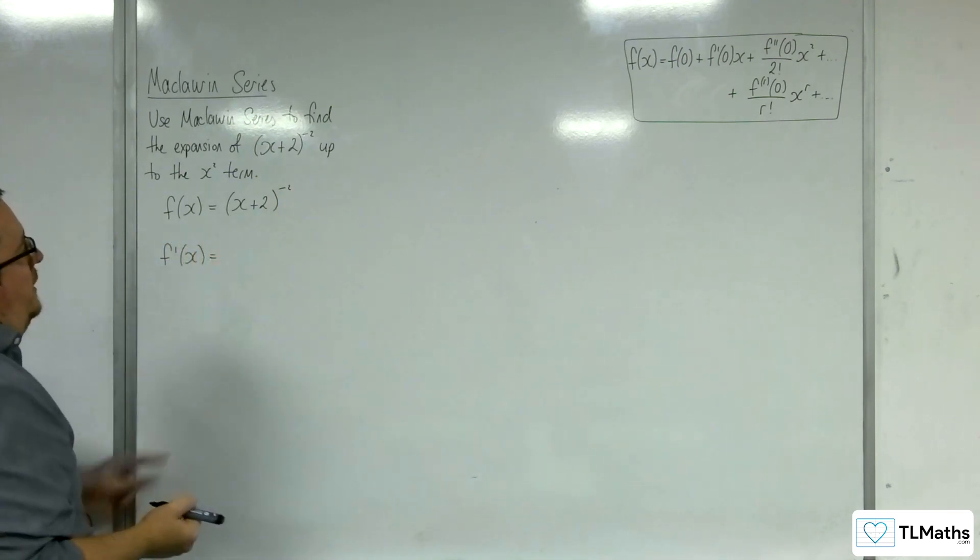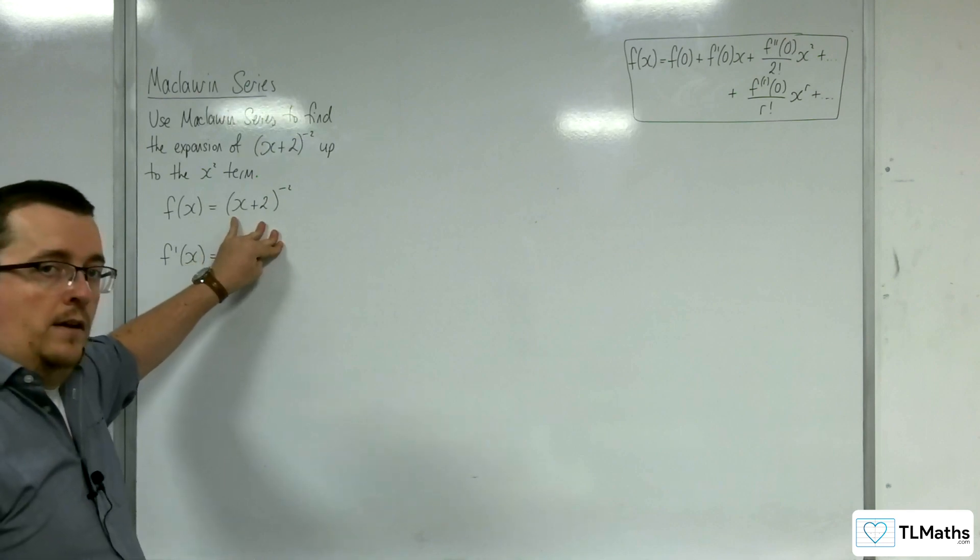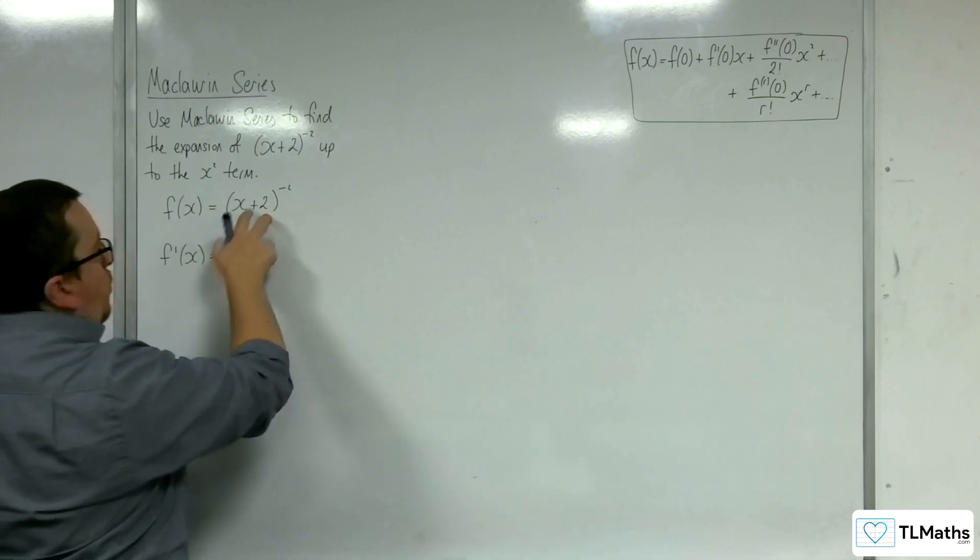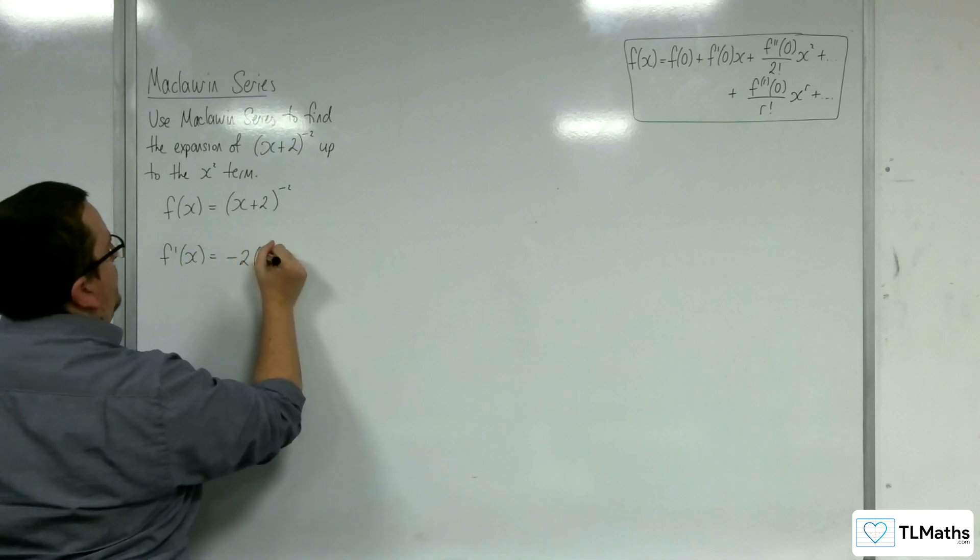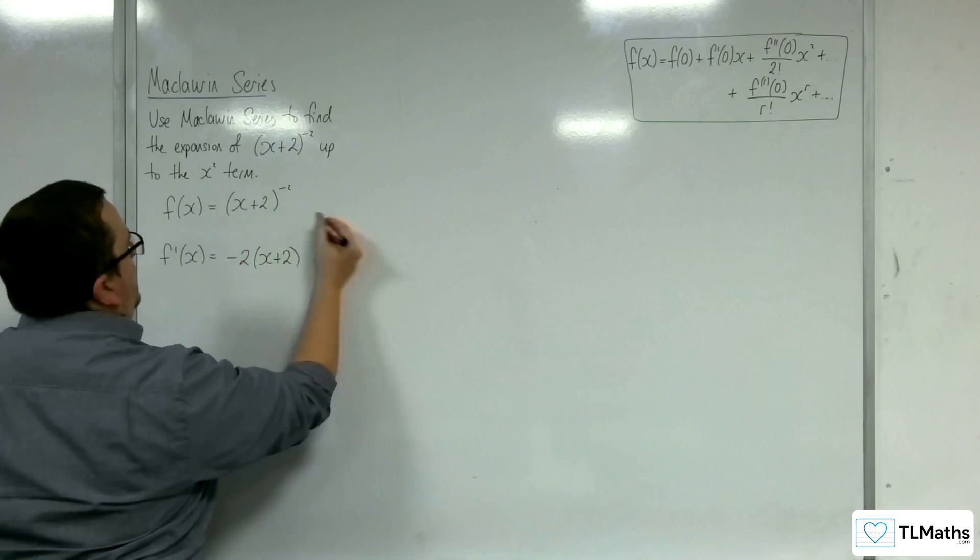So f'(x), differentiating this using the chain rule. The derivative of the inside is just 1, so I'm going to get -2(x+2)^(-3).